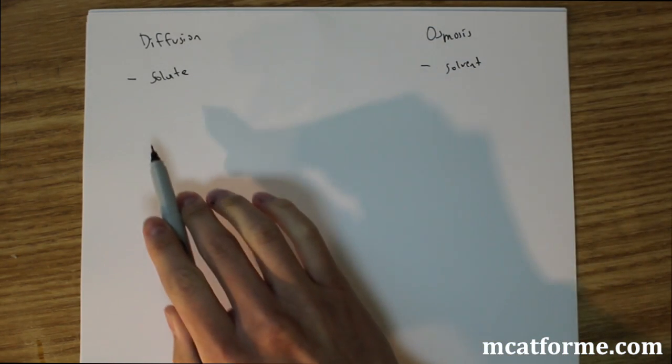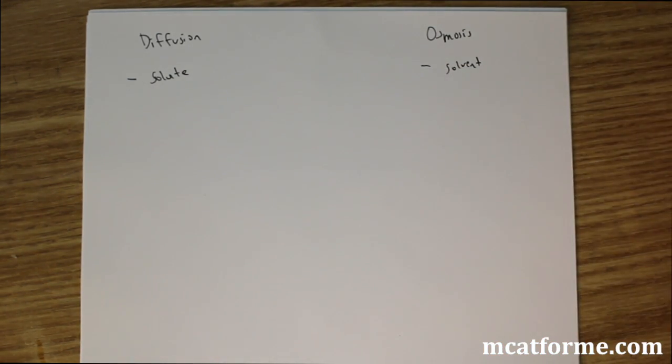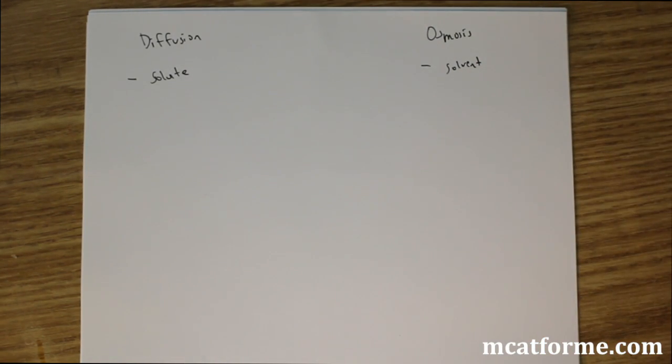So the solute is whatever is in the smaller amount. And we can think of it like salt water. The salt is going to be the solute and the solvent is going to be the actual water.